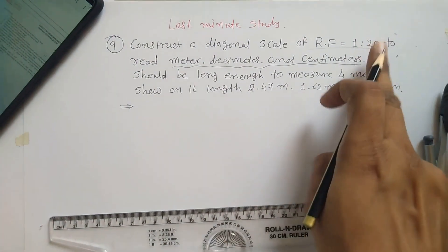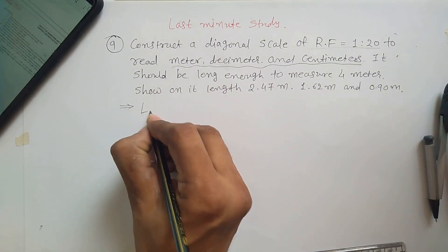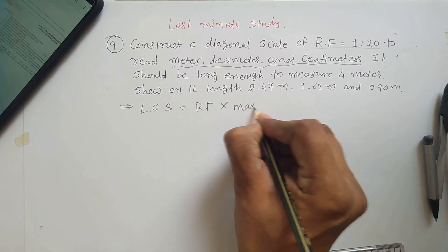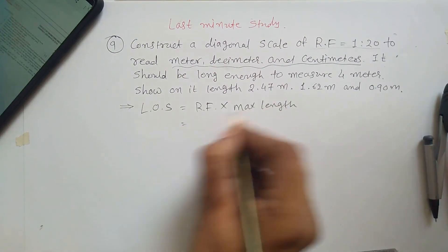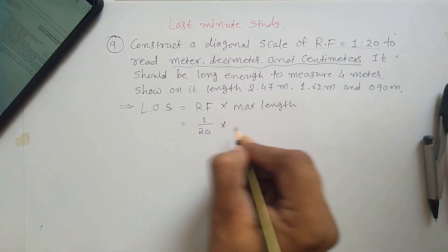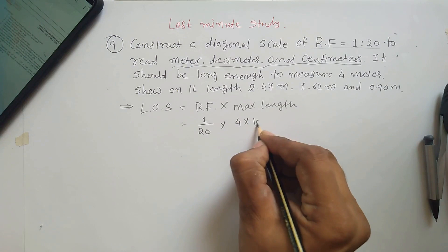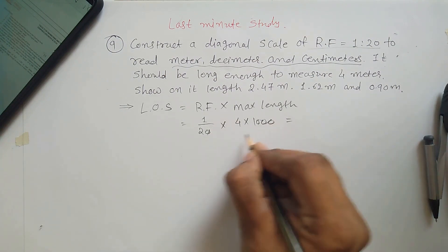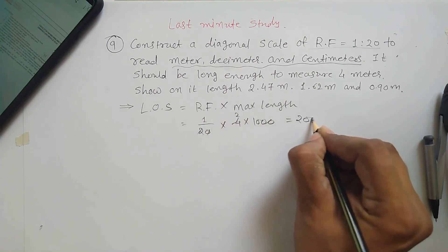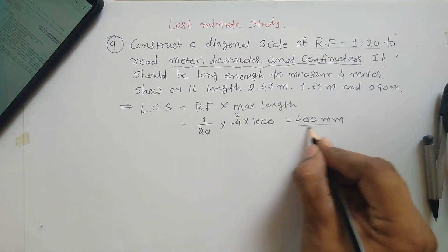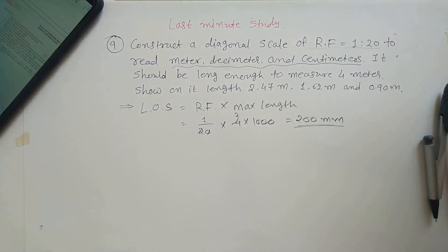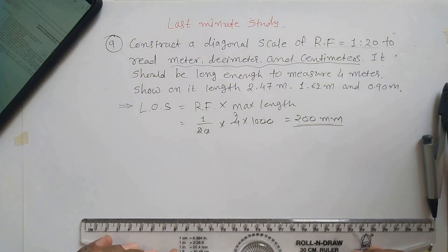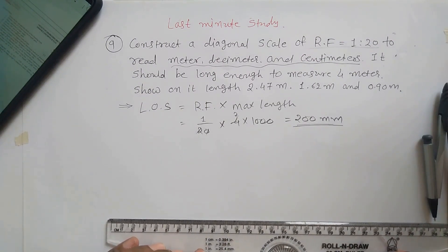The scale should be long enough to measure four meters. Since RF is given, you start with the length of scale, which is RF into maximum length. RF is 1/20 and maximum length is 4 meters. Converting to millimeters, the length of scale is 200 mm. Same as a plane scale, you have to construct a scale with 20 centimeters or 200 millimeters.